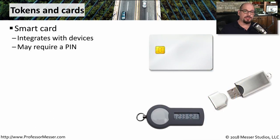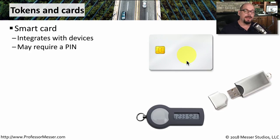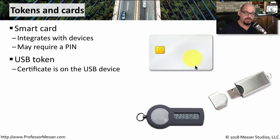Some types of physical security require that you have something with you. For example, you may have a smart card — you can slide the smart card into a computer, provide your personal identification number, and that might gain you access to that resource. Another type of component you would have with you is a USB token. A certificate is usually stored on the USB drive, and you would plug that into a device to use as another authentication method.